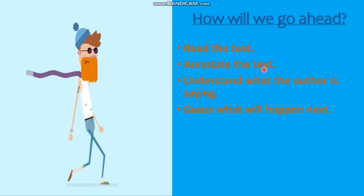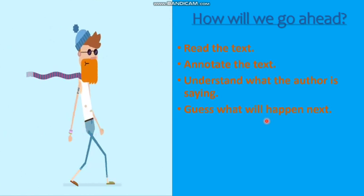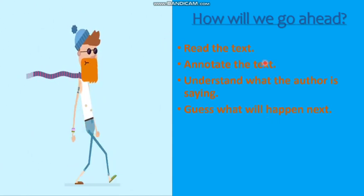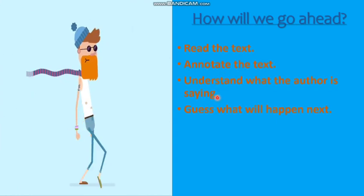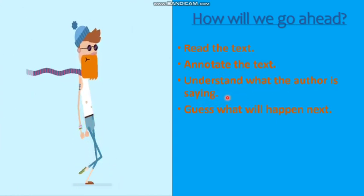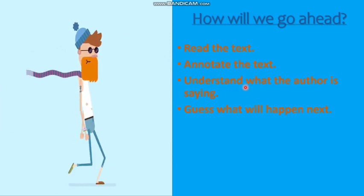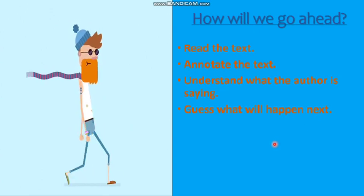Now let's see how we will go ahead. When we say we will predict the story, here are the steps to reach the answer. First, you will read the text. Second, you will annotate the text. Third, you will understand what the author is saying — carefully understand what the author is trying to convey. And then you have to guess what will happen next. Read, annotate, understand, guess — these four steps.